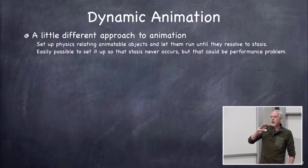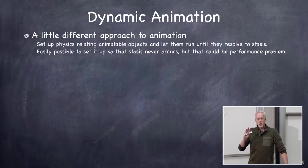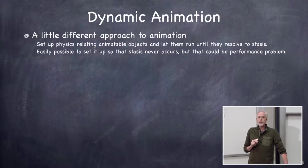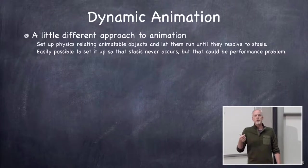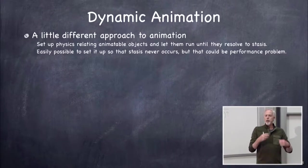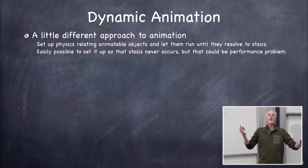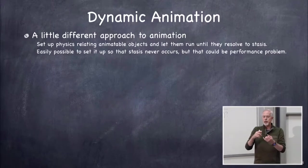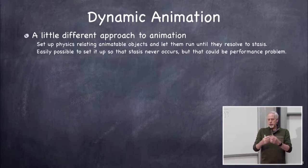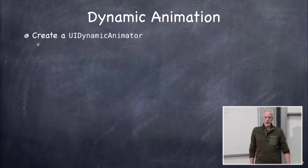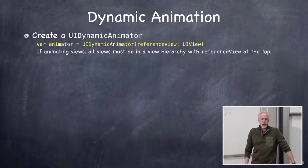Now here's number three: dynamic animation. It's a little more powerful and complicated — a different approach altogether. We set up physics attributes on our views and just tell them to go. We're talking physics like density, friction, gravity, and so on. You put them on there and they just start moving, because physics.